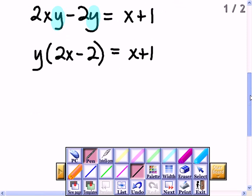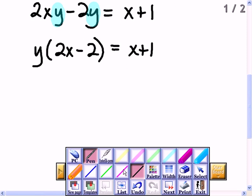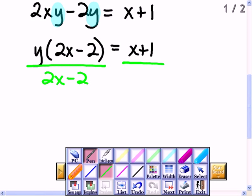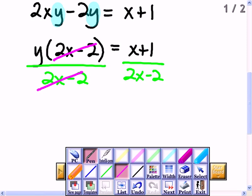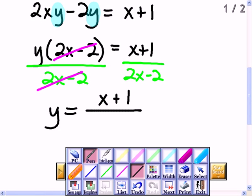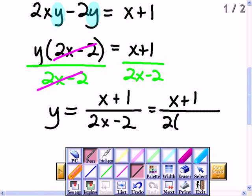And now to solve for y, I just divide. So if I divide both sides by 2x minus 2, that cancels out. And I've got y alone on the left side, and it is equal to x plus 1 over 2x minus 2. And you could factor the denominator since they both have a 2. I'm not sure how picky your teacher is. So we could write it like that.